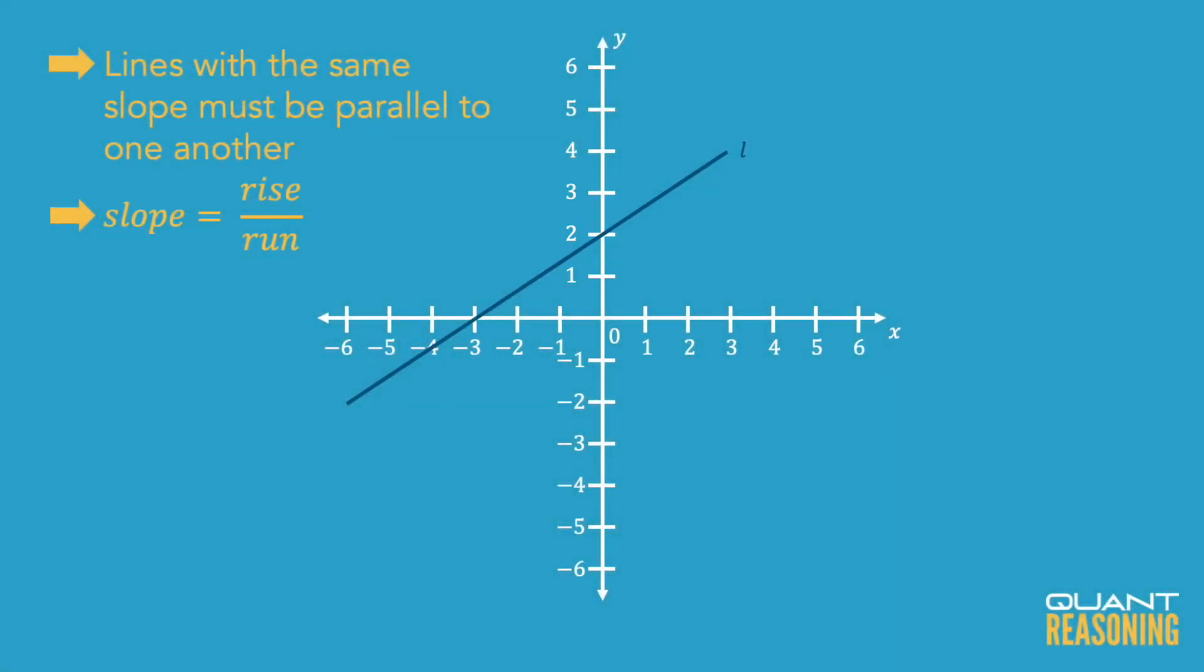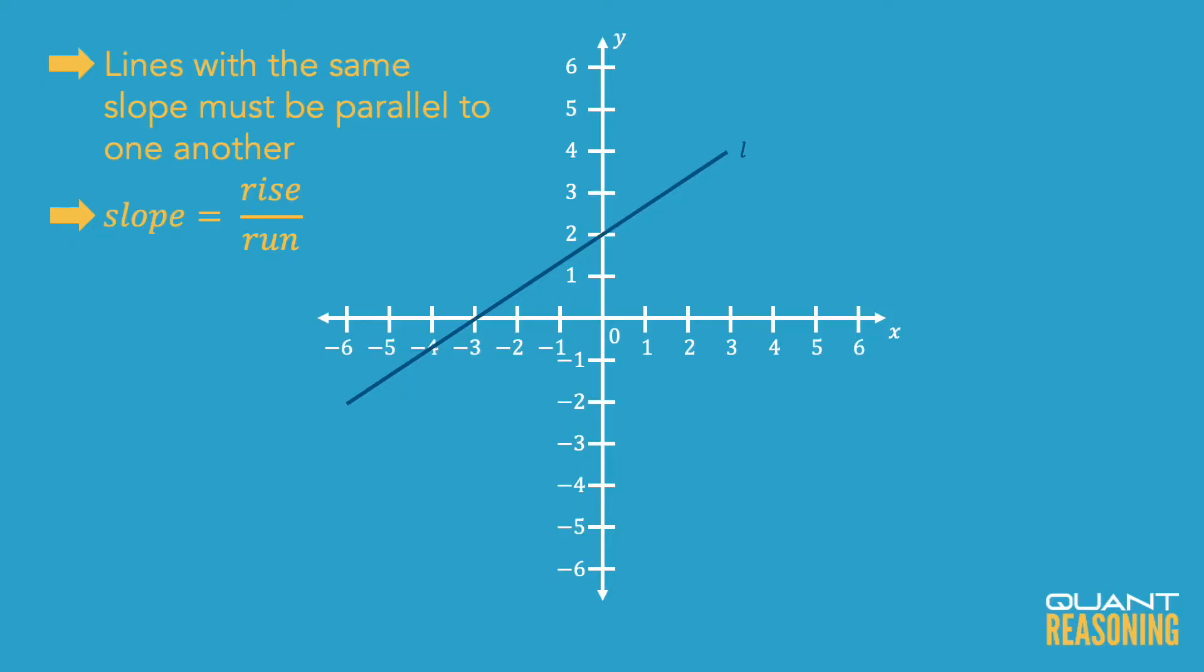You can see that in that segment of the line we have a rise of 2, because it's going up from the x-axis, which is a value of 0, up to a y-coordinate of 2, so that's a rise of 2 units, while it's running from left to right from negative 3 to 0, so that's a run of 3. The ratio of rise to run here is 2 over 3.